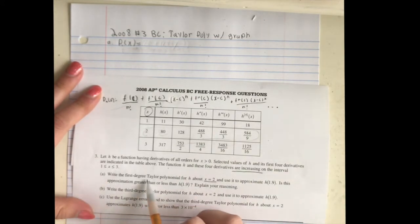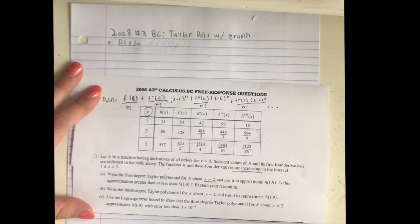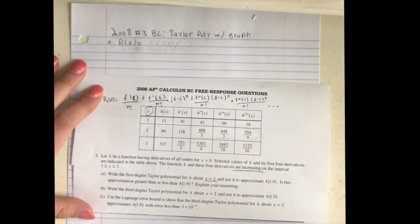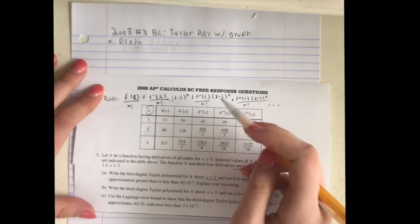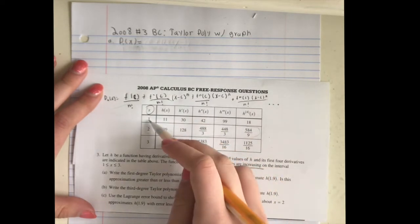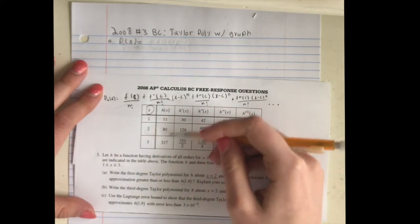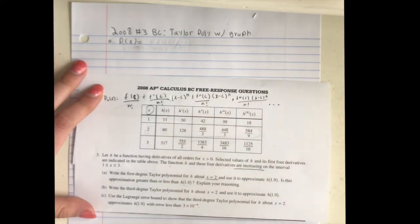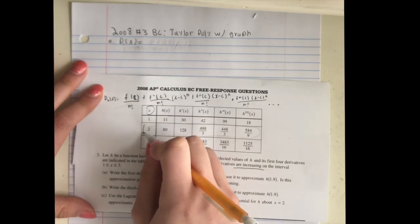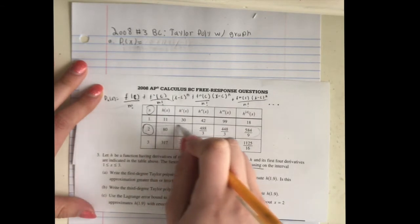Part A: Write the first-degree Taylor polynomial for h about x equals 2 and use it to approximate h of 1.9. Is this approximation greater than or less than h of 1.9? Explain your reasoning. It's important to note this chart could be confusing — you might just think of using the first, second, third derivative values, but you need to acknowledge it's saying x equals 2. So we're going to use this row right here — all of this row.